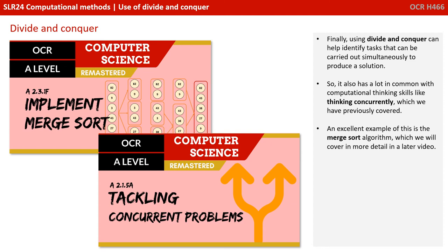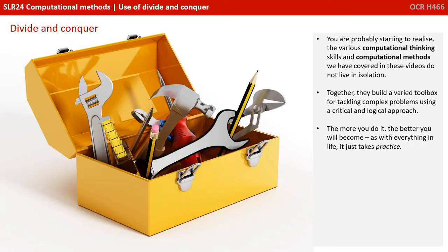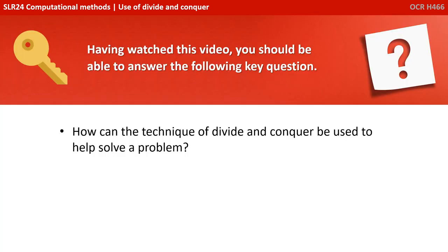An excellent example of this is the merge sort algorithm, which we'll cover in more detail in a later video. You're probably starting to realise the various computational thinking skills and computational methods we've covered in these videos do not live in isolation. Together they build a varied toolbox for tackling complex problems using a critical and logical approach. The more you do it, the better you'll become — it just takes practice. Having watched this video, you should be able to answer the following key question: how can the technique of divide and conquer be used to help solve a problem?